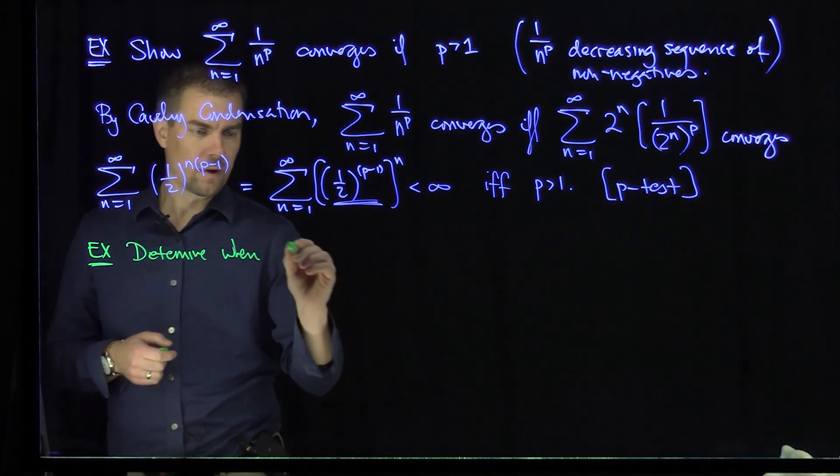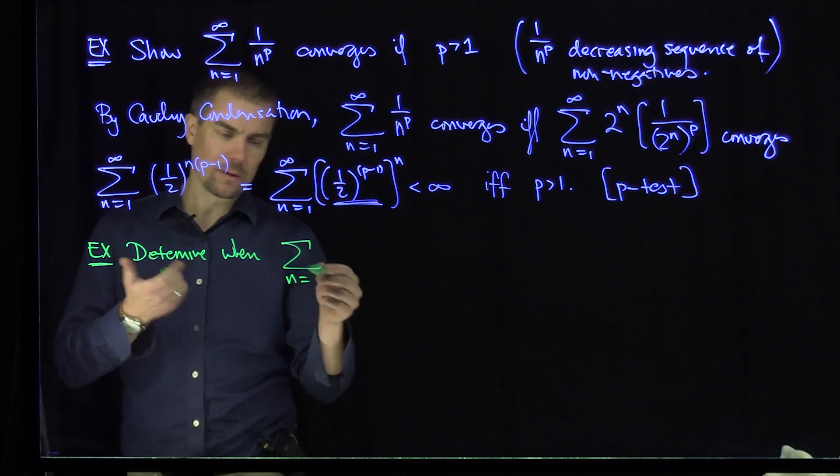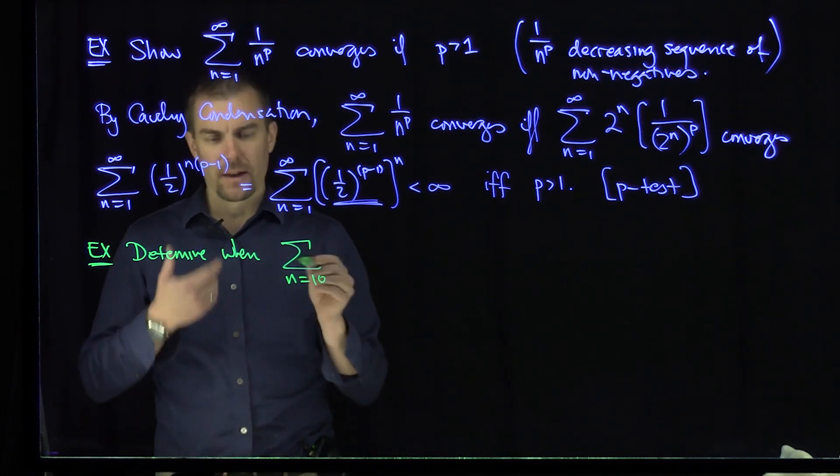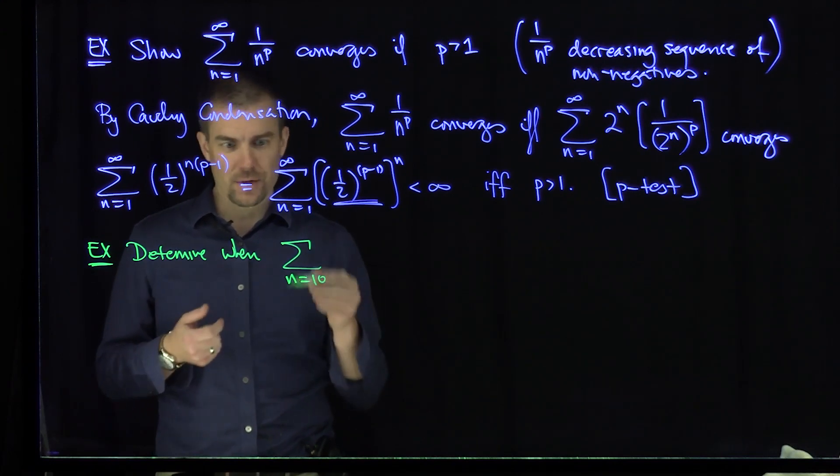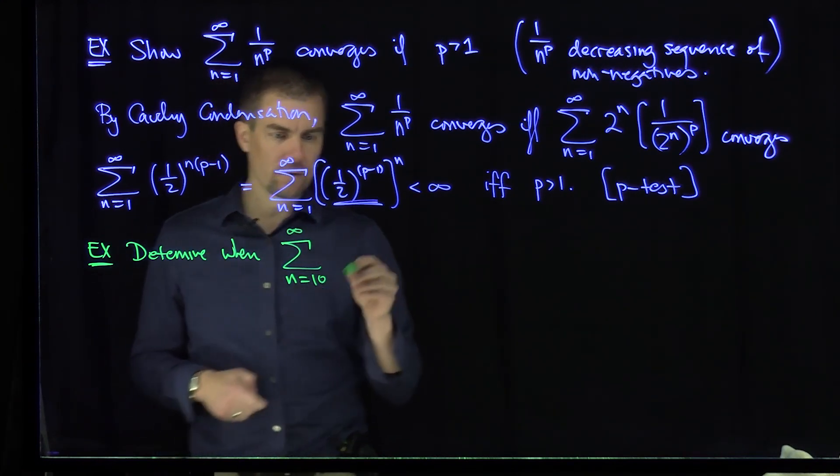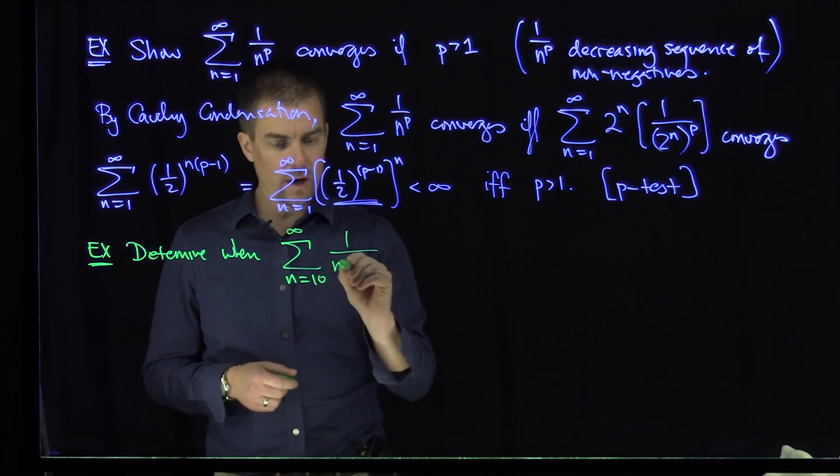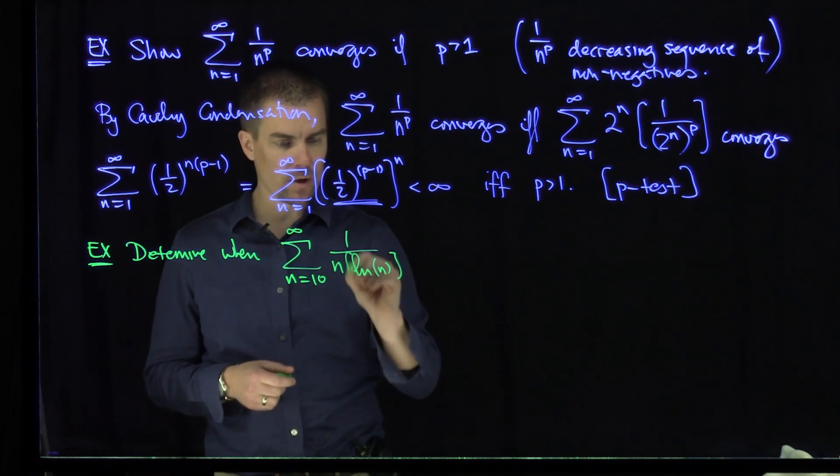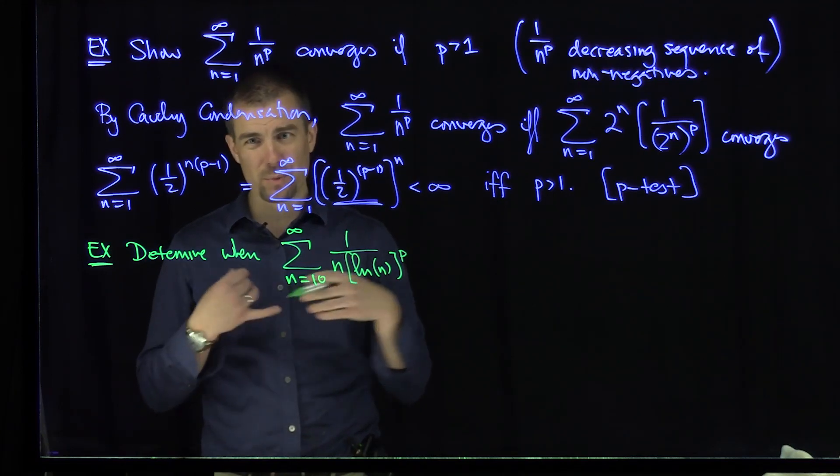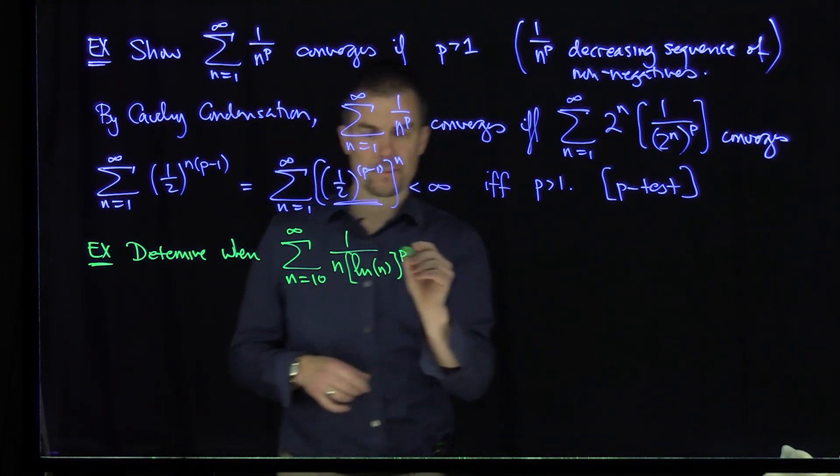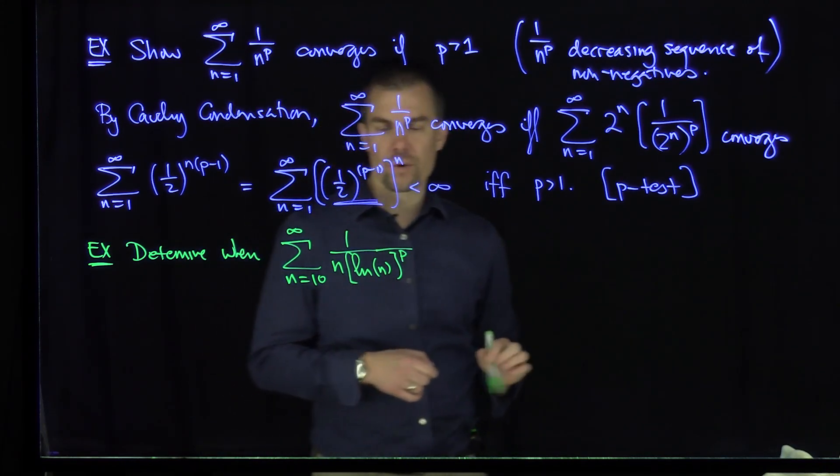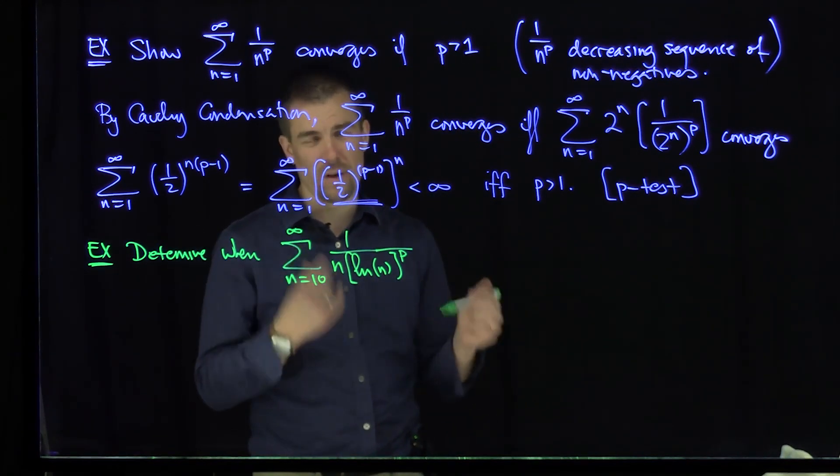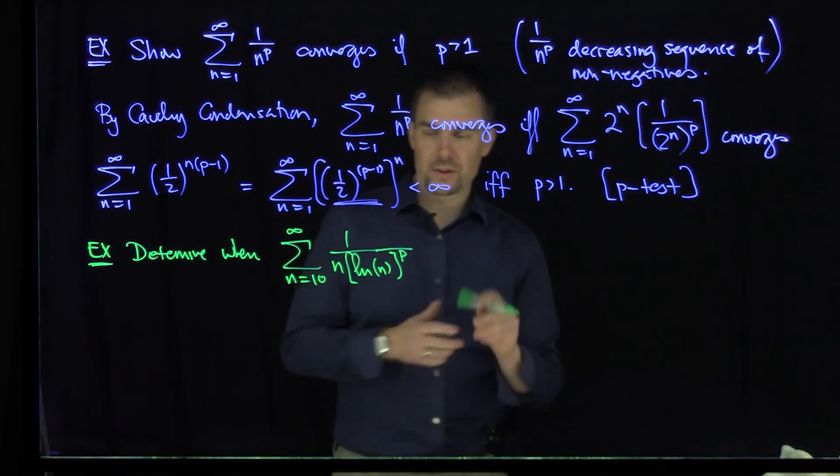Determine when the sum n goes from, I'm going to put a large number over here just so that the logarithm doesn't get screwed up, I'm just going to say 10. It doesn't really matter where we start the series, we only care about the tail behavior. 10 to infinity of 1 over n times the natural log of n to the power p. I'm just putting 10 to make sure I don't make any mistakes with the sign of the logarithm. We definitely don't want to put 1 in there because I'd have the log of 1, which is 0. So determine when this converges.